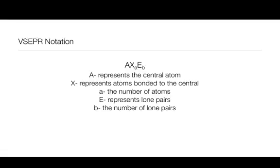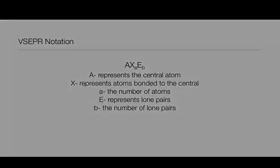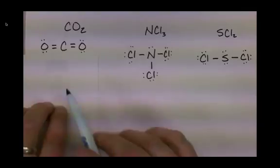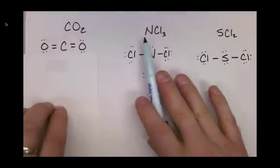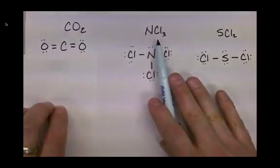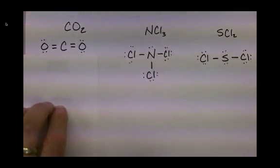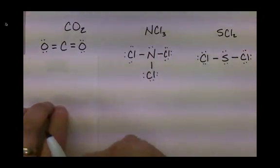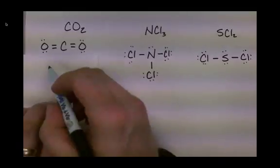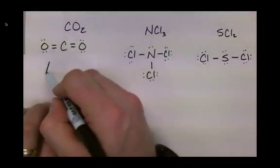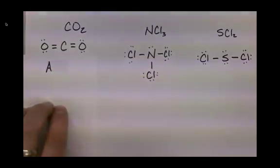Let's look at three examples of how this works: carbon dioxide, nitrogen trichloride, and sulfur dichloride. In carbon dioxide, we are going to represent the carbon, the central atom, with the letter A.